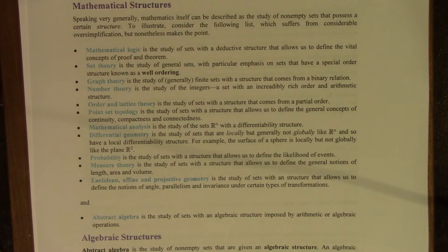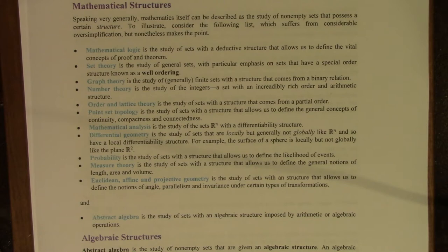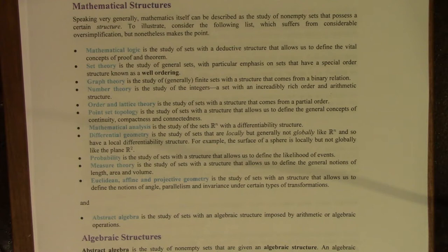For example, the surface of a sphere is locally like the plane. If you were on the surface of a sphere and all you could see was an immediate neighborhood, it would look like a slightly curved plane. The curvature is not necessarily an issue for differentiability. But if you saw the whole sphere, you would realize it was different from a plane. Probability is the study of sets with a structure that allows us to define the likelihood of future events. Measure theory is the study of sets with a structure that allows us to define the general notions of length, area, and volume.